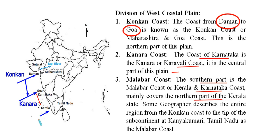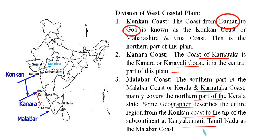This Malabar region mainly covers parts of southern Karnataka and northern Kerala, which is why it is also known as the Kerala and Karnataka Coast — the southern part of the Western Coastal Plain. Some geographers describe the entire region from the Konkan Coast to the tip of the subcontinent at Kanyakumari, Tamil Nadu, as the Malabar Coast.